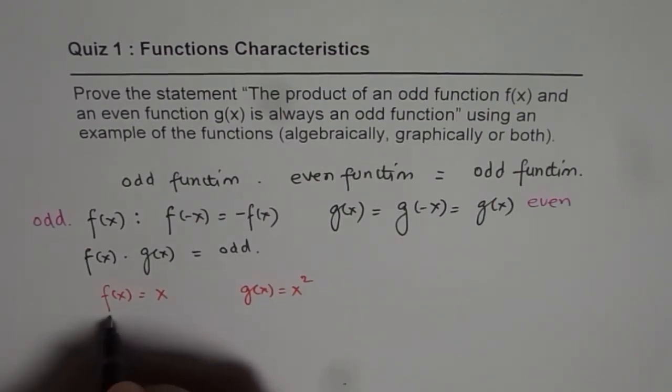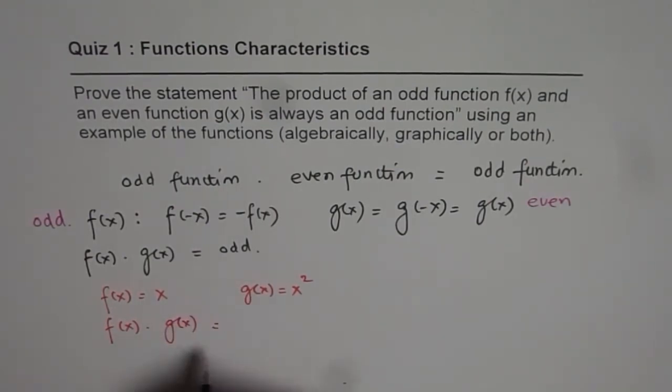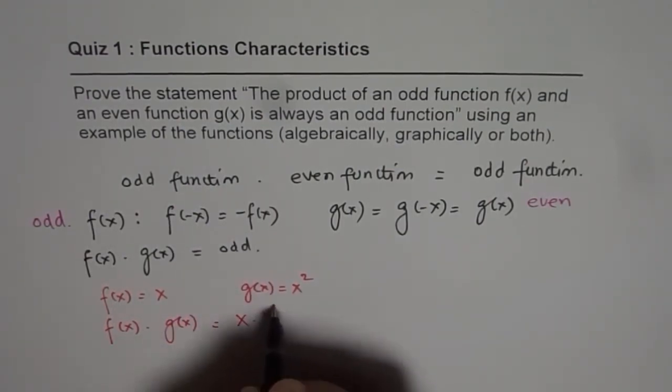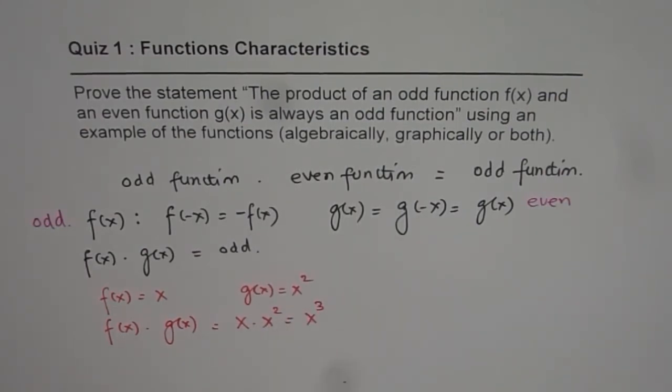Now, in this particular case, what is the product of f(x) and g(x)? It is x times x square and it is x cube. Now, x cube is let us say h(x).